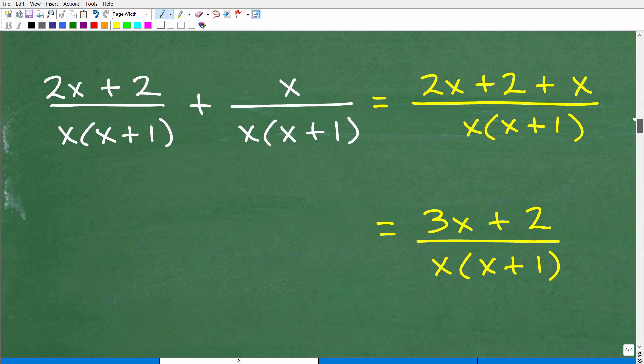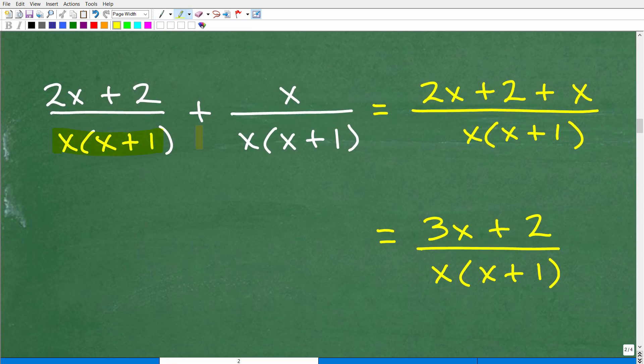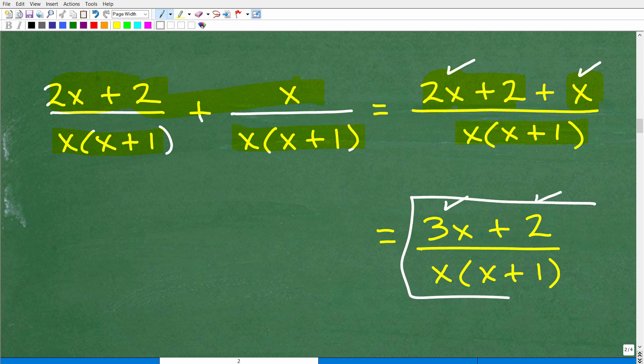All right, so here is the problem and of course we have the denominators the same. So we just write one denominator x times (x + 1), and then we're going to add the respective numerators. So that'll be 2x + 2 right here, plus this x, and then of course we're going to add like terms. 2x and x is 3x plus 2. There you go. This is our final answer.